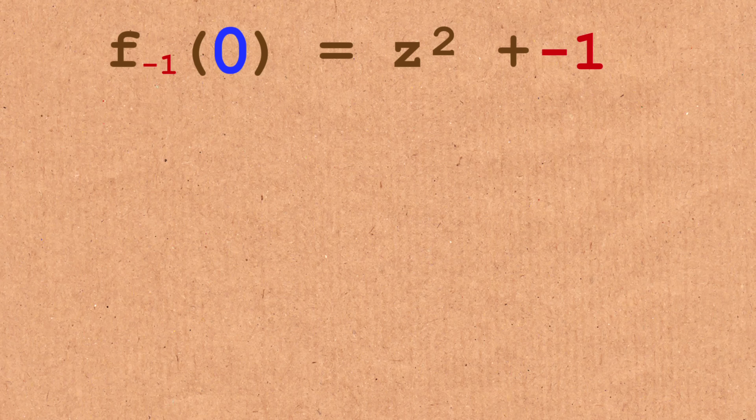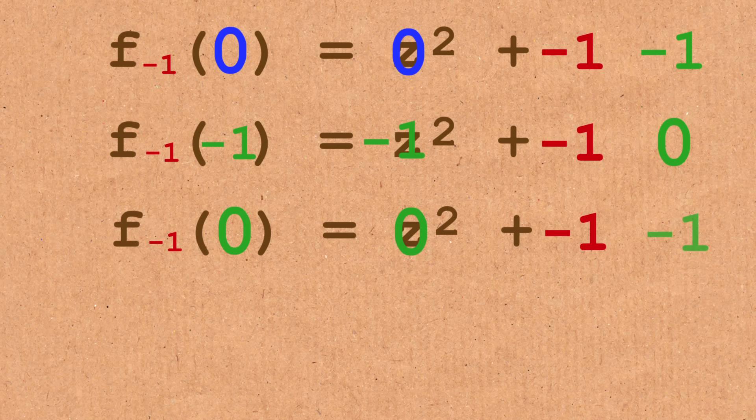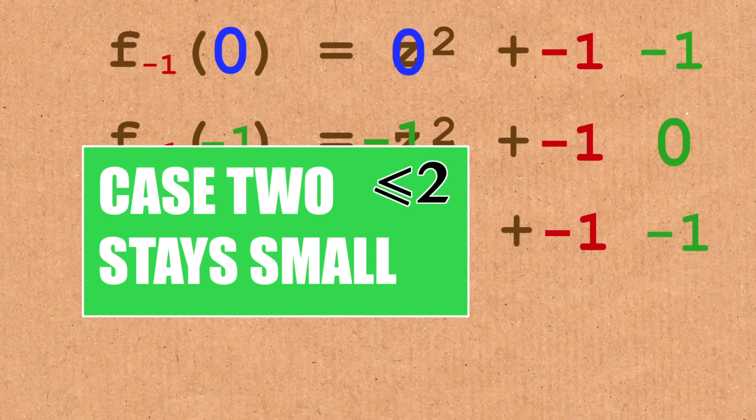If we look at zero and we start applying this function, well f minus one of zero is zero minus one which is minus one. If we plug in minus one to that function we have minus one squared which is one minus one which is zero. But we know what happens to zero right, it goes back to minus one. So these iterates just alternate between minus one and zero and they never get large. That's an example of case two.